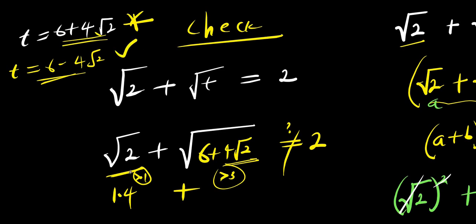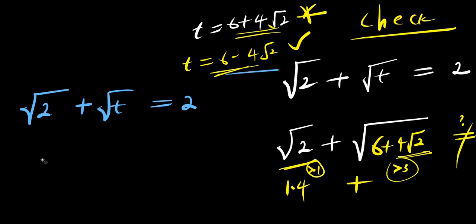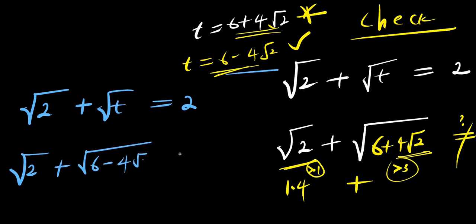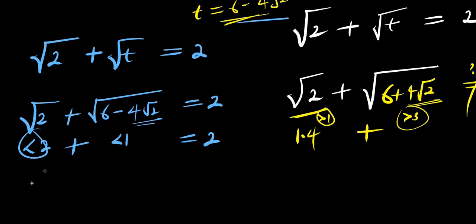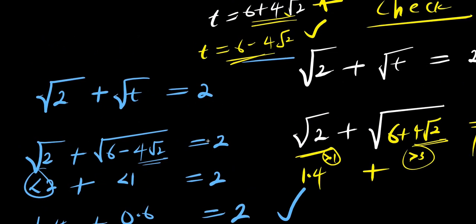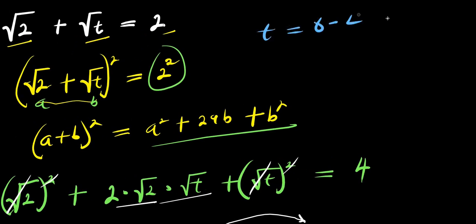So we consider t equals 6 minus 4 root 2. Substituting: root 2 plus square root of 6 minus 4 root 2 equals 2. Root 2 is about 1.4 — greater than 1 but less than 2 — and square root of 6 minus 4 root 2 is about 0.6. So 1.4 plus 0.6 gives exactly 2. So that is the correct answer: t equals 6 minus 4 root 2 is the only solution.